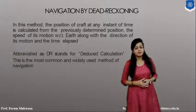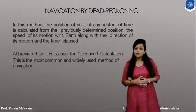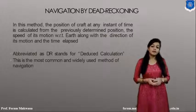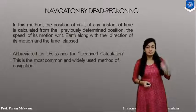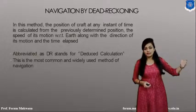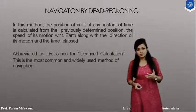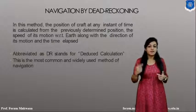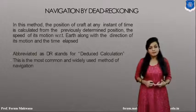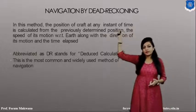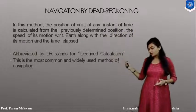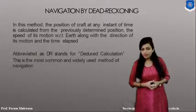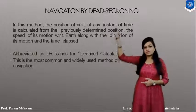The third method is navigation by dead reckoning. In this method, the position of the aircraft at any instant of time is calculated with the help of a previously determined position, along with the speed of motion with respect to the earth, the direction of motion, and the time elapsed. It is abbreviated as DR — dead reckoning. It requires less calculation to fix the position, and it is the most commonly used method of navigation.